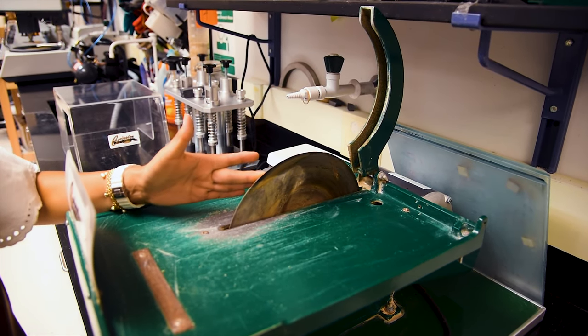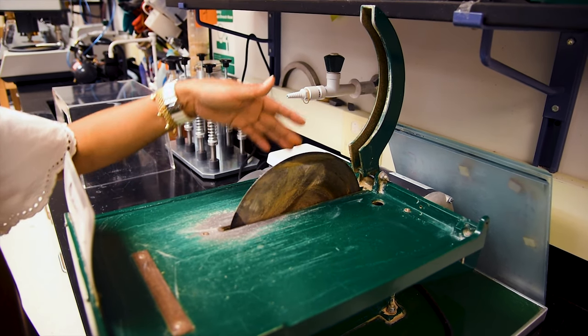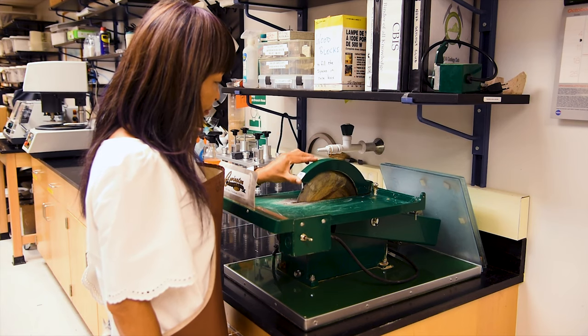An adjustable guard over the top of the saw blade suppresses the amount of spray and keeps the water concentrated on the blade and the sample.